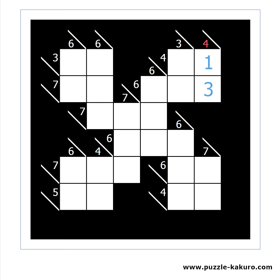For example, for this 4 we should have 1 and 3 in the block below. A number cannot appear more than once in the same block of cells. This means that we cannot have 2 and 2 for the 4.